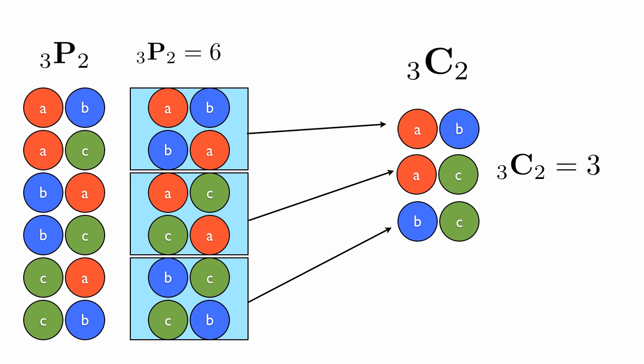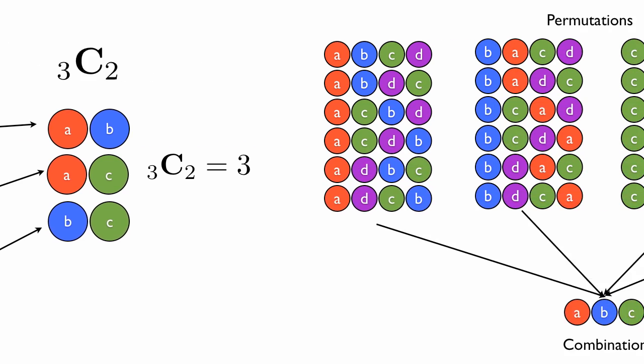As you see, there's a very strong connection between permutations and combinations. But what exactly is it? Let's look at this example here.